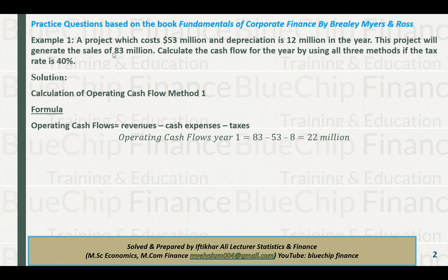For the second method, first take revenues of 83 million, then subtract costs of 53 million, then subtract depreciation of 12 million. After this subtraction you get profit before tax. Apply the 40% tax rate and deduct it to get profit after tax. Then add back depreciation, because when we subtract depreciation to apply tax, we need to add it back afterward.